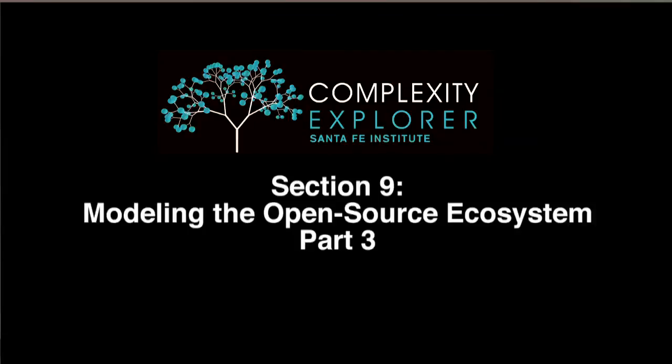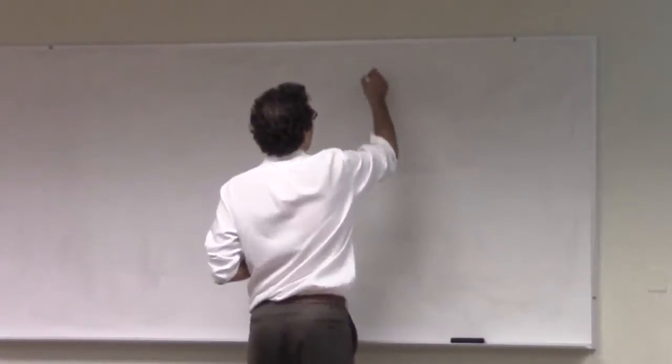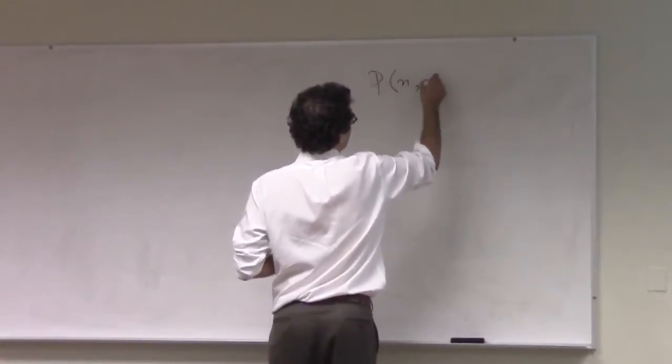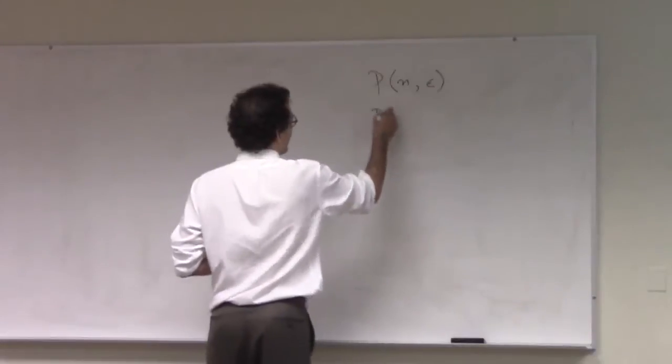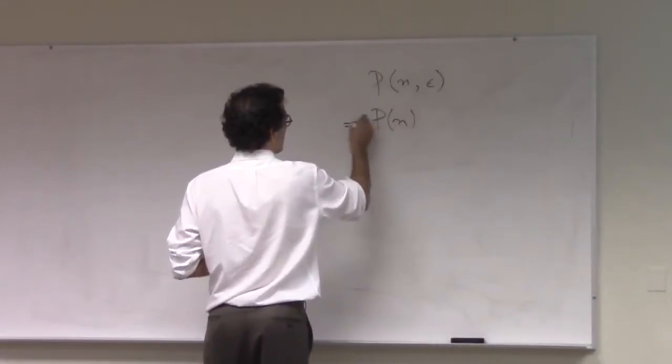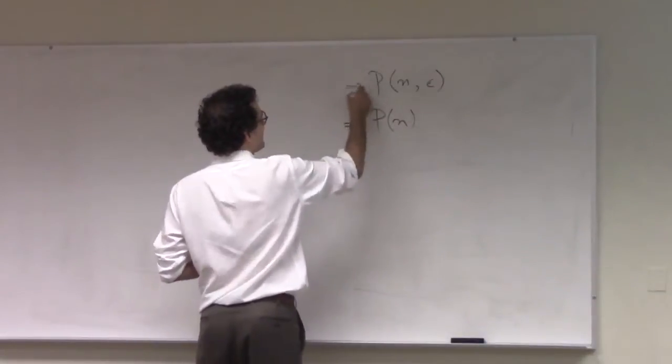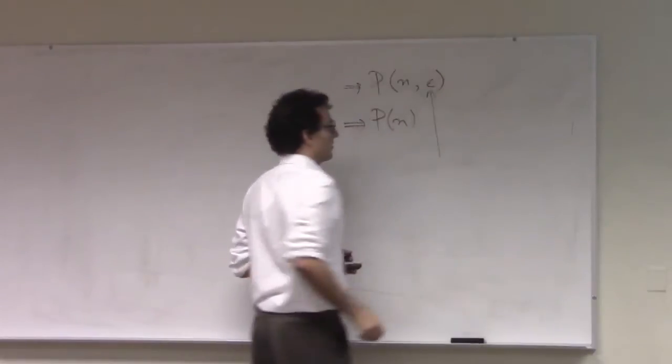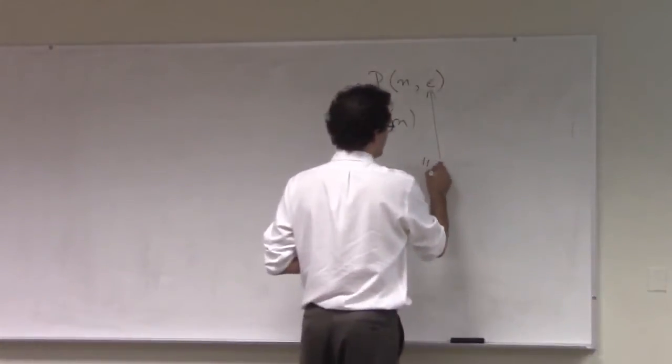In the previous unit, I showed you a way to use Maxent models to describe the language abundance P(n) by reference to a hidden variable epsilon, which we refer to as programmer time.